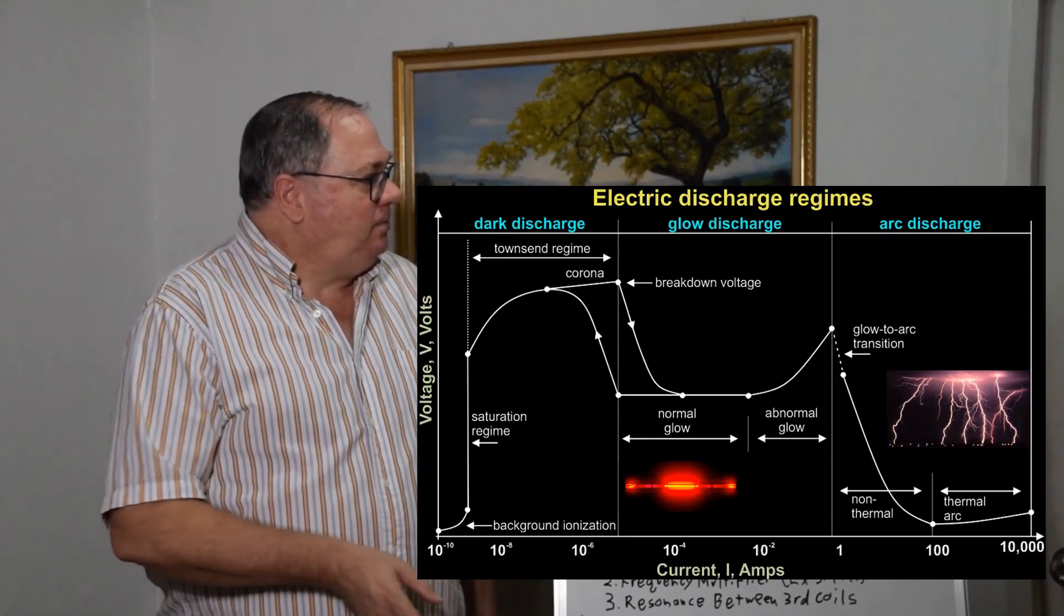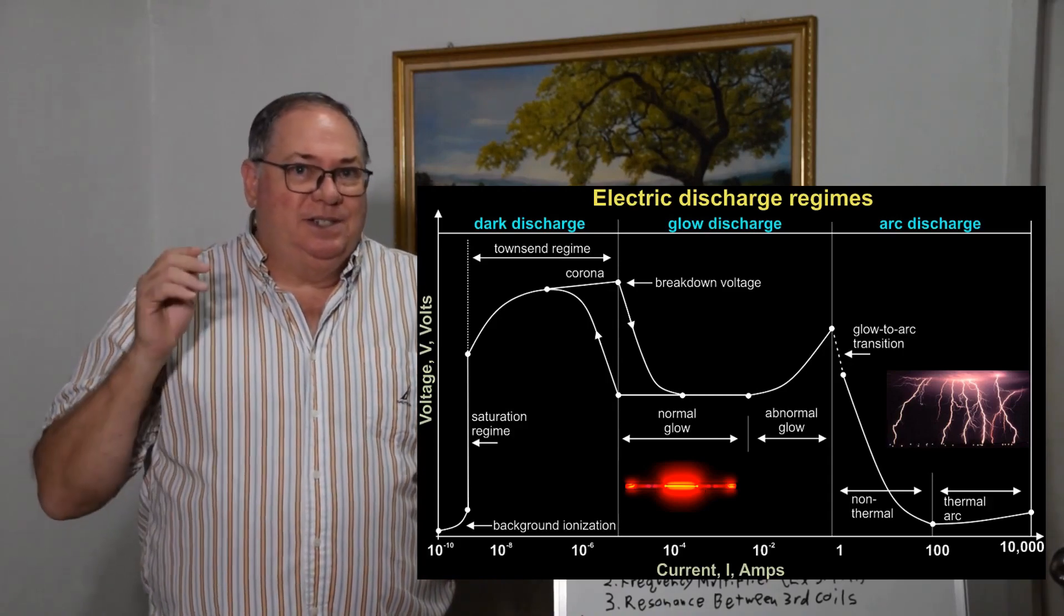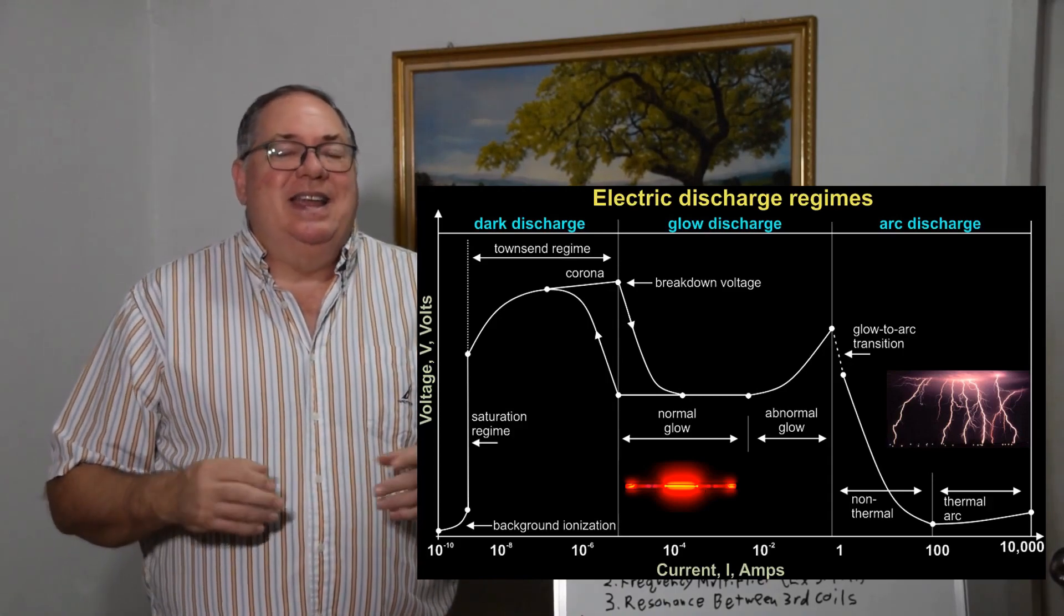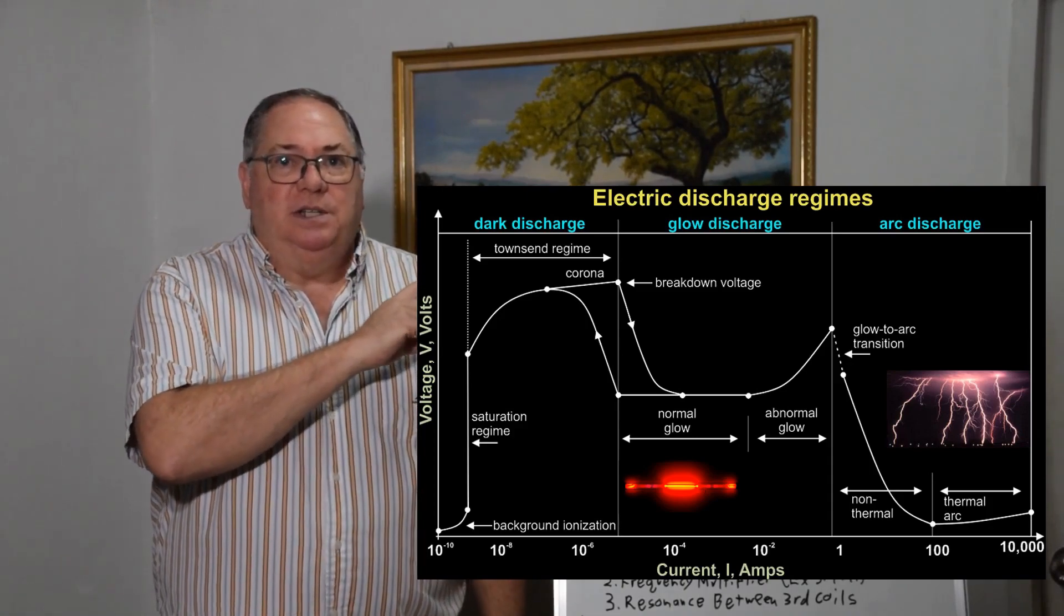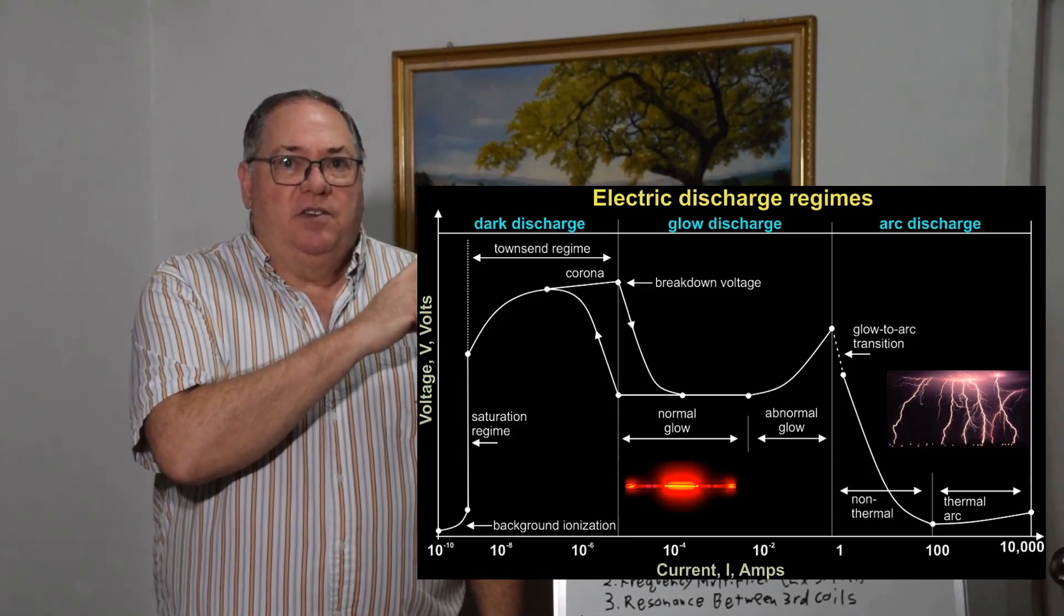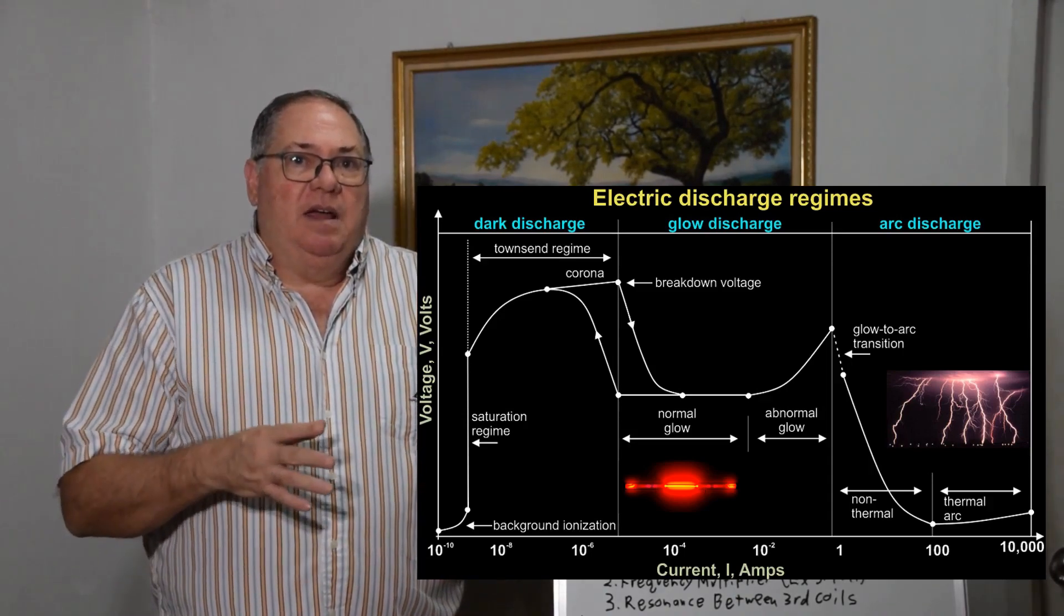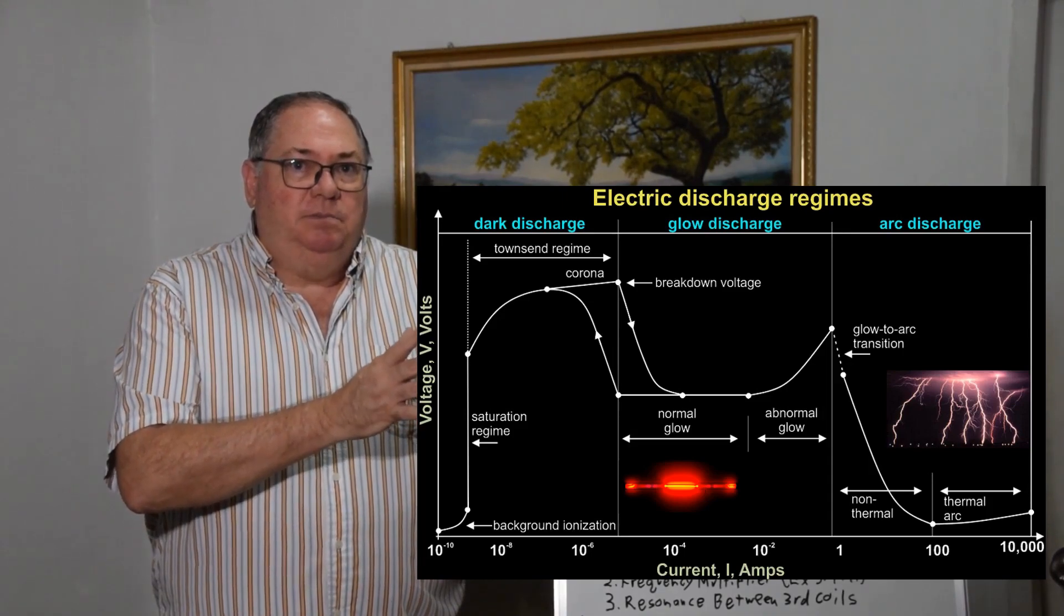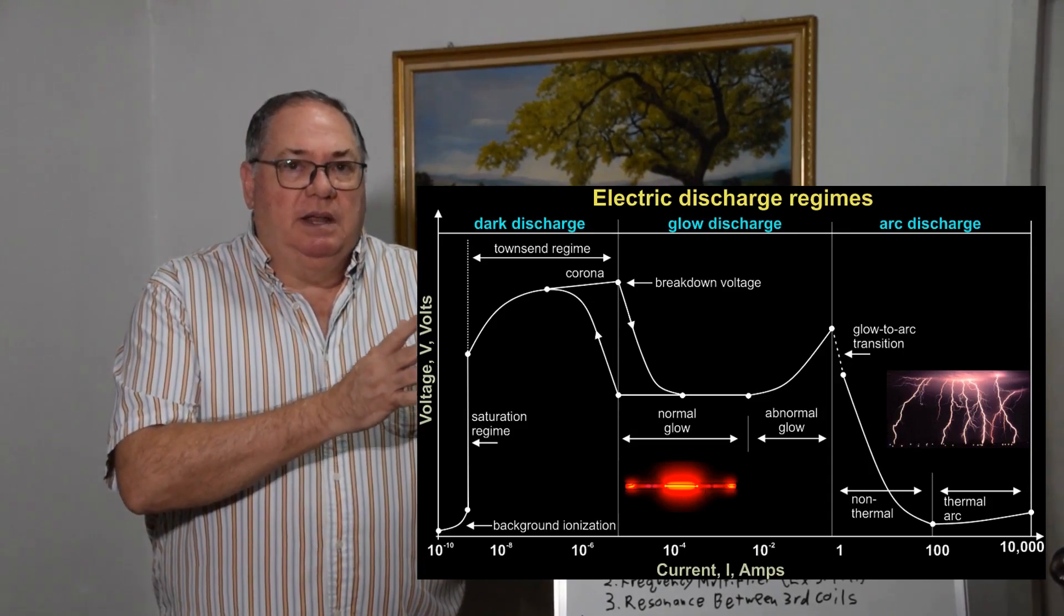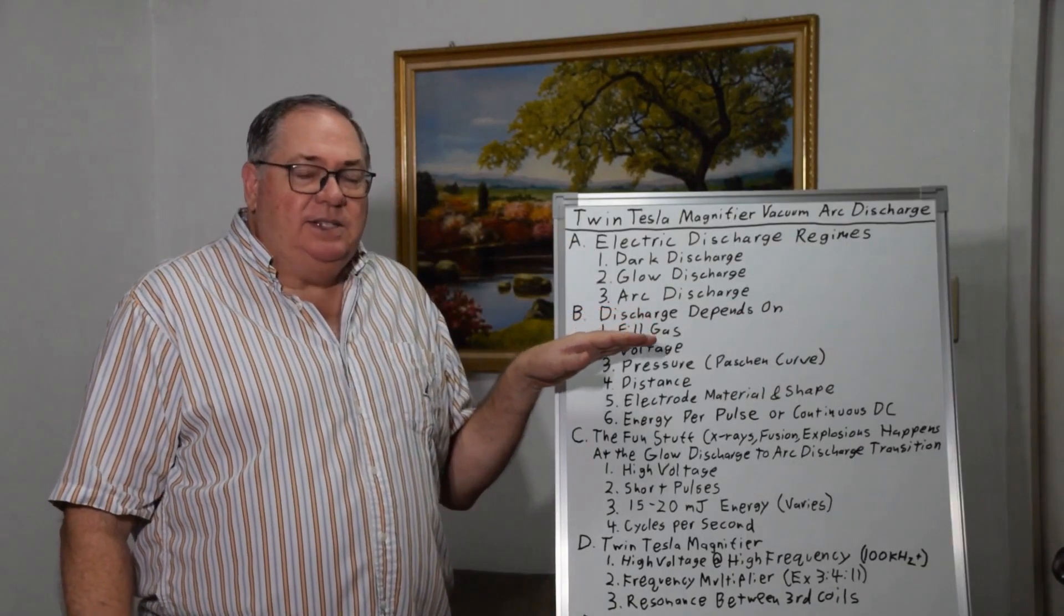Finally you have arc discharge—that's where you get the lightning. If you look at the chart, the high voltage peaks at the arc discharge and falls, so you only have a small window where you get maximum voltage at the arc.